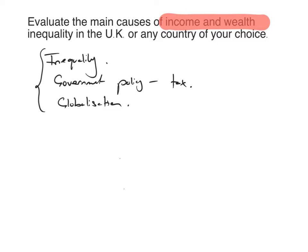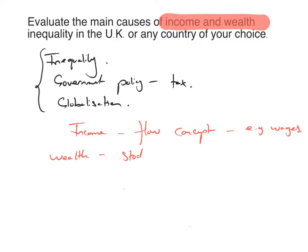As soon as I look at the question, I'm looking for key terms. So I'm looking at income inequality. Income is a flow concept, so I'm going to be thinking about inequality in the distribution of wages from employment. I'm also going to need to think about wealth, which is the stock of assets that people own, and inequality in the distribution of those assets, for example, the housing stock.